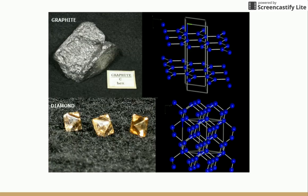If you look at this picture, we have both graphite and diamond, and you'll see that in these pictures we have a crystalline structure — it's a solid and it shows a very specific chemical composition.